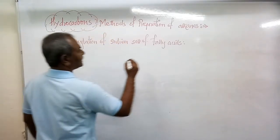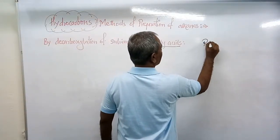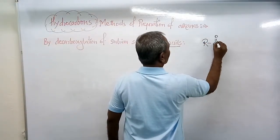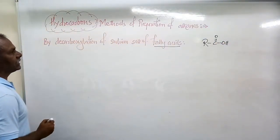Fatty acids are generally represented as R-C double bond O-OH. This is the representation of fatty acids.